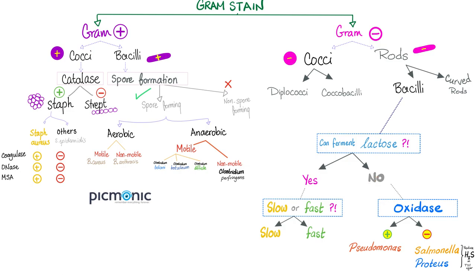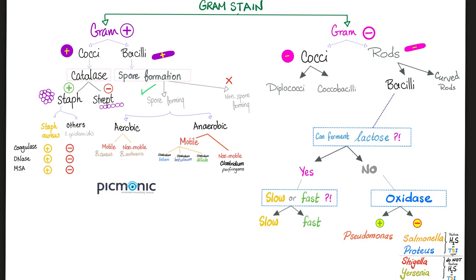If you can't ferment lactose and appear white on MacConkey, the next question is: are you oxidase positive — do you possess the enzyme oxidase? If yes, this could be Pseudomonas. If no oxidase, you could be one of four organisms. The first two produce H2S on TSI (triple sugar iron) agar; the second two do not produce H2S. In the last video we talked about Salmonella and Proteus, which do produce hydrogen sulfide. Today we'll talk about Shigella and Yersinia, which do not produce hydrogen sulfide.